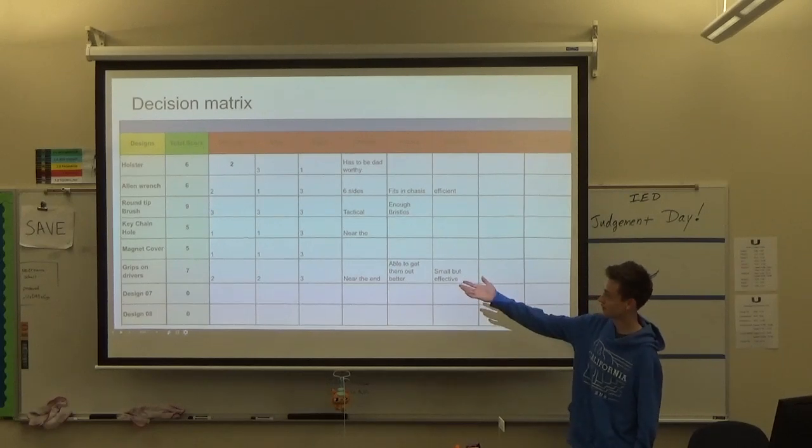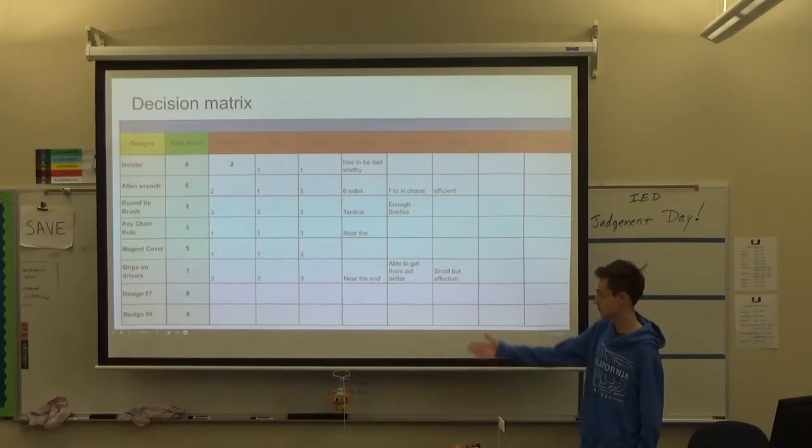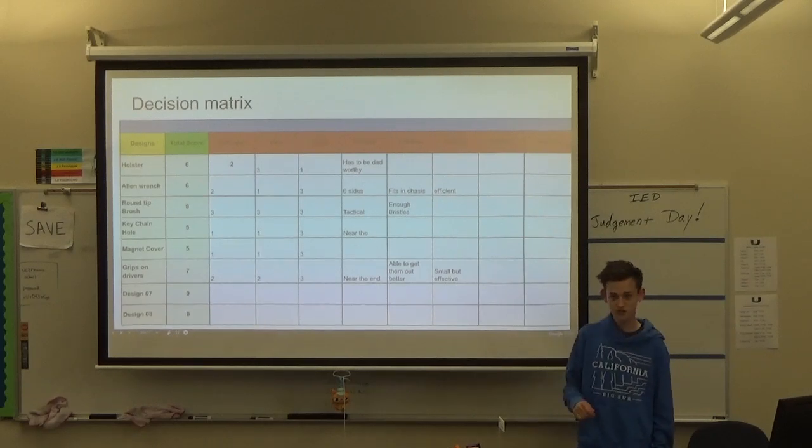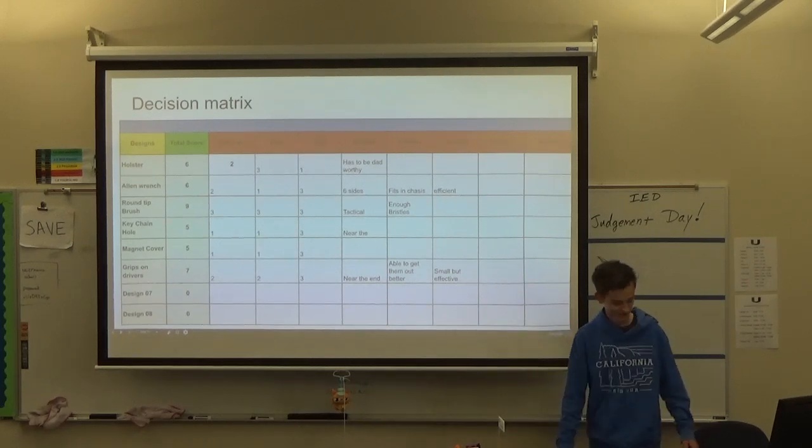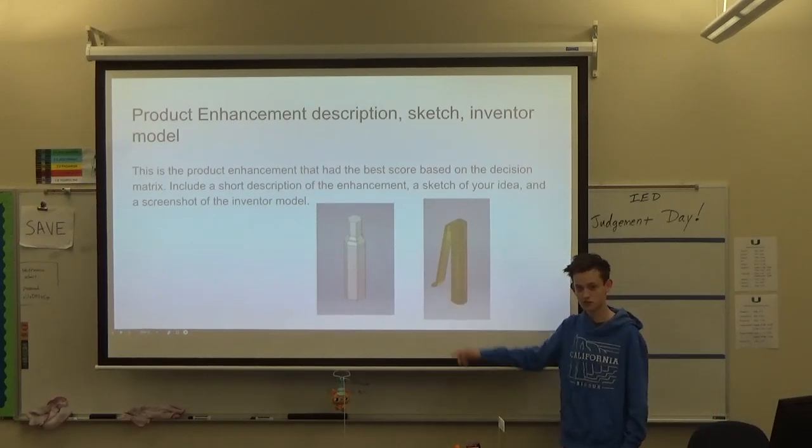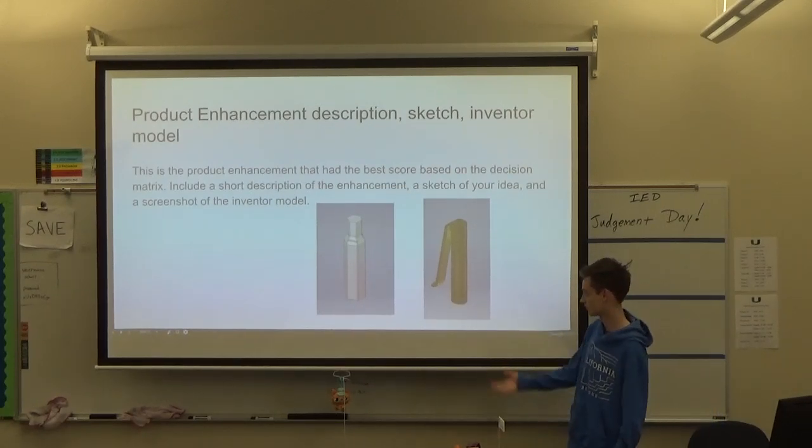This is my decision-making tricks. I decided to make two of them. I made the Allen wrench and the holster. Right here, this is the holster. That was cake. I just got bored and did that.